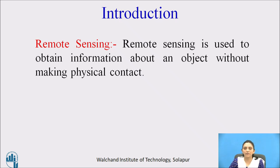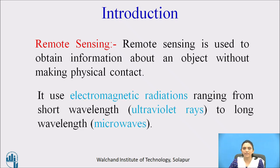Remote sensing is nothing but the scanning of an object. It is used to obtain information about an object without making physical contact — collecting data regarding the object from a distance. Remote sensing uses electromagnetic radiation ranging from short wavelength to long wavelength. An example of short wavelength is ultraviolet rays, and microwaves are an example of long wavelength.